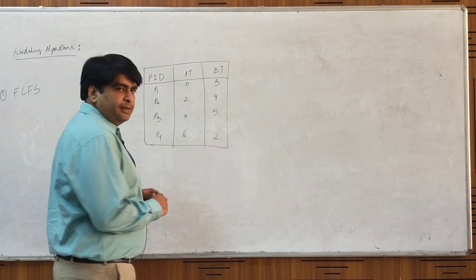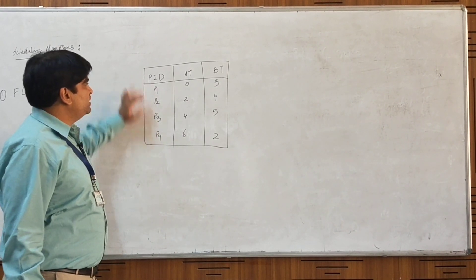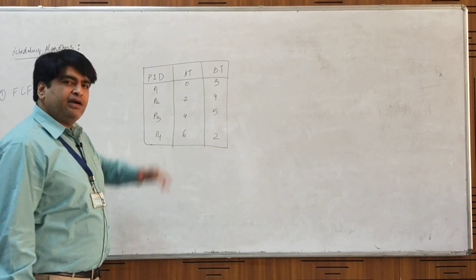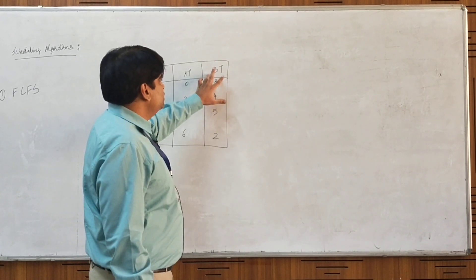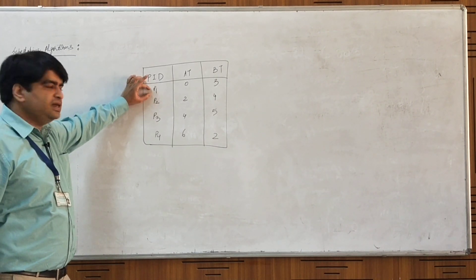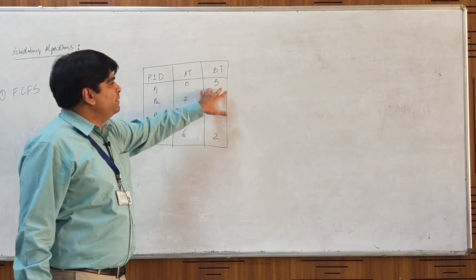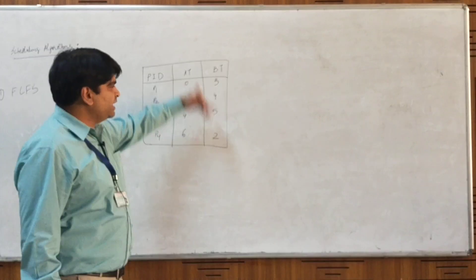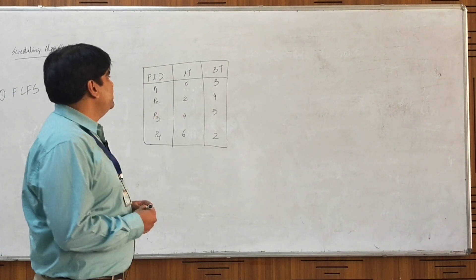How do we implement this? Consider this example. This is a table showing four different processes with their process IDs P1, P2, P3, P4. This column denotes the arrival time — the time at which the process has made the request for the CPU — and this column denotes the burst time, meaning how long each process wants to use the CPU. We have to calculate the average waiting time and average turnaround time of the system.